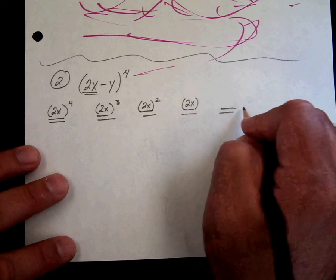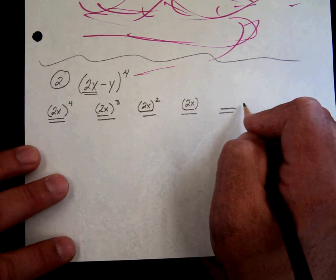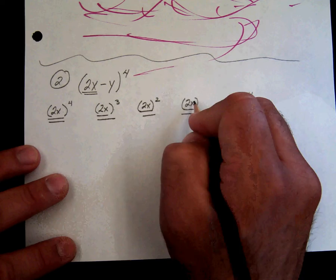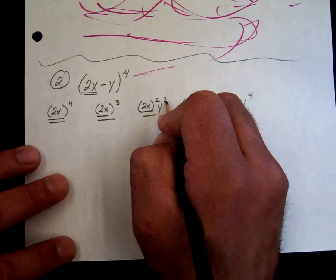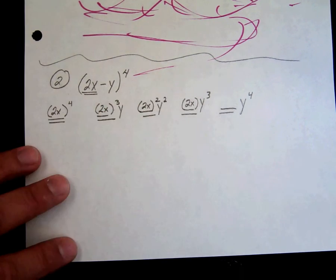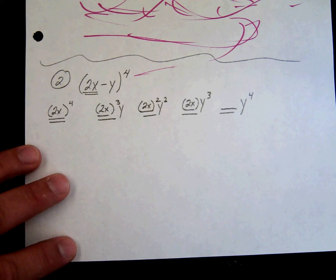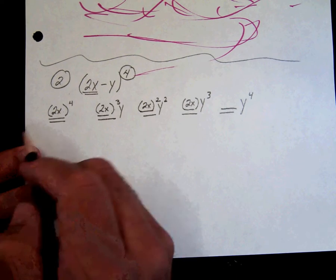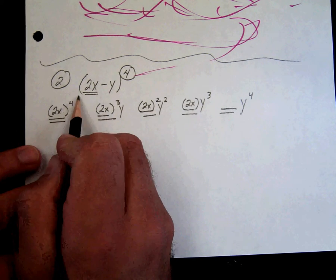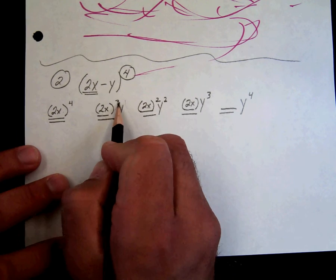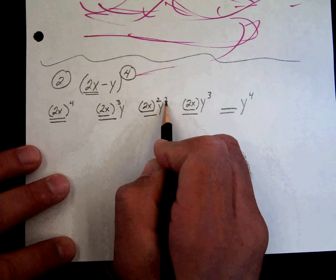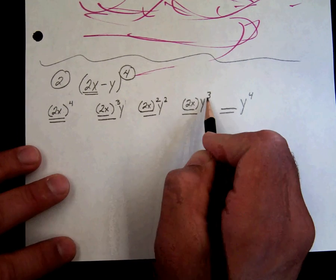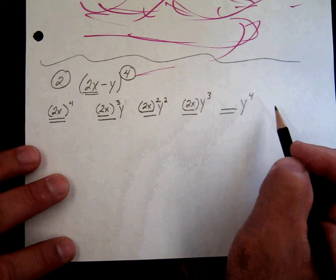Once you get to that blank spot, that's where y to the fourth shows up. Then y cubed, then y squared, then y, and then nothing. So you want to check as you go through. See this exponent 4? Nothing plus 4 is 4. 1 plus 3 is 4. 2 plus 2 is 4. 1 plus 3 is 4. Nothing plus 4 is 4.